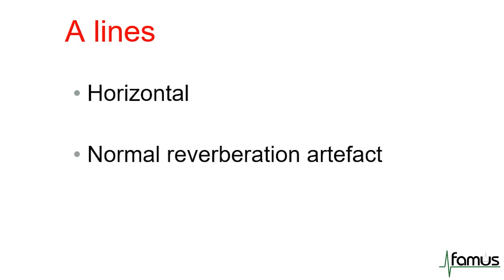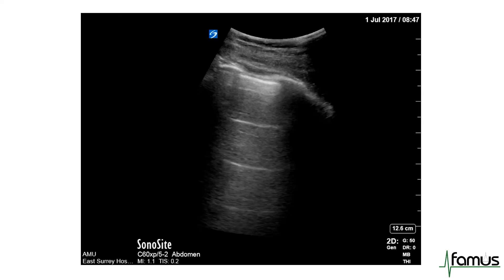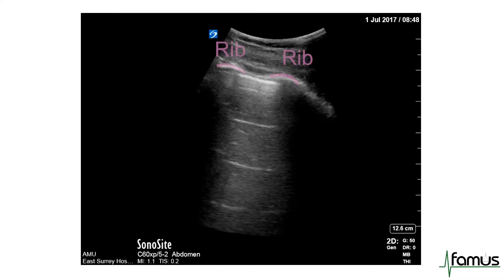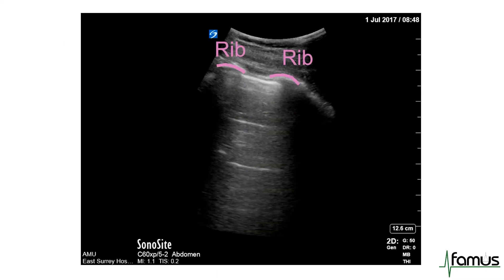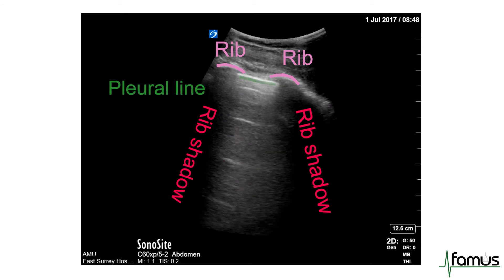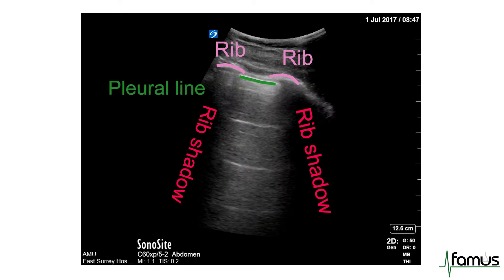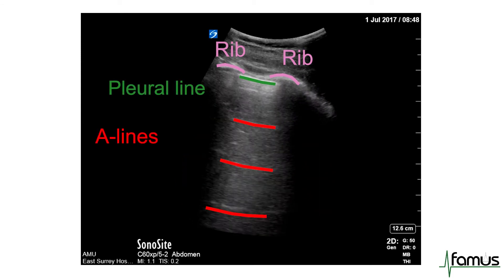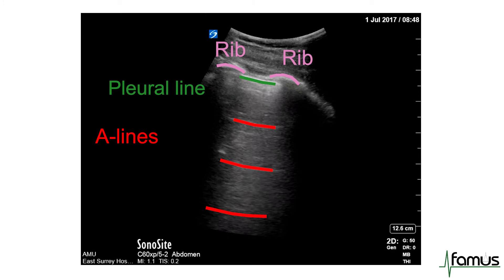A lines — they are horizontal and are a normal reverberation artefact. They tend to imply that the lung is dry underneath. In this example video, you can see the two ribs casting a rib shadow with the pleural line in between and multiple A line reverberation artefacts underneath.